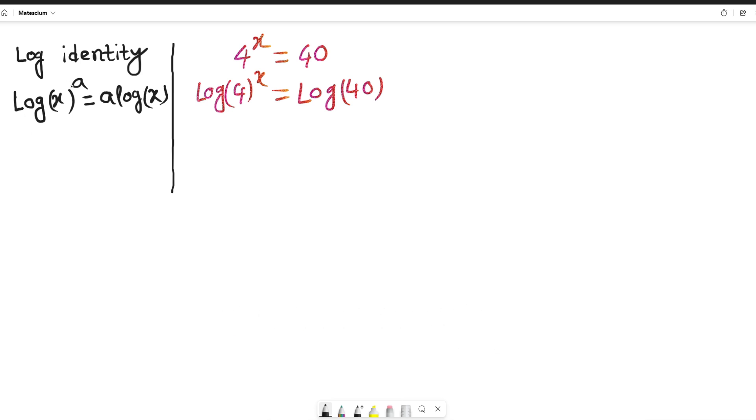We can use this logarithmic identity exactly here on the left-hand equation. That means the left-hand side of this mathematical equation becomes x log of 4 on the left-hand side, and the right-hand side becomes log of 40.